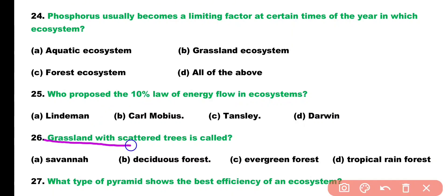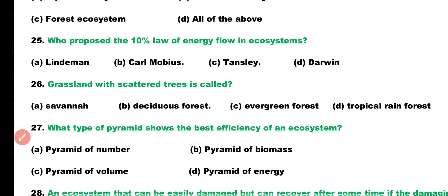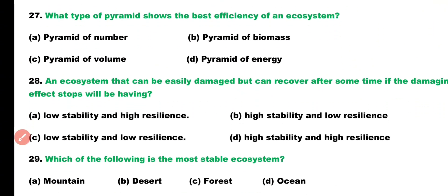Question number twenty-six. Grassland with scattered trees is called: Savanna, Deciduous Forest, Evergreen Forest, or Tropical Rainforest? Correct answer is option A. Grassland with scattered trees is called Savanna.